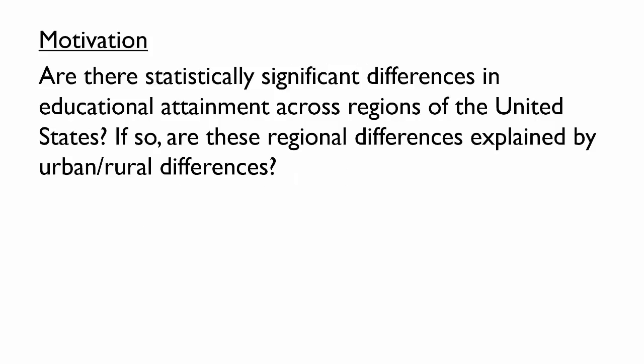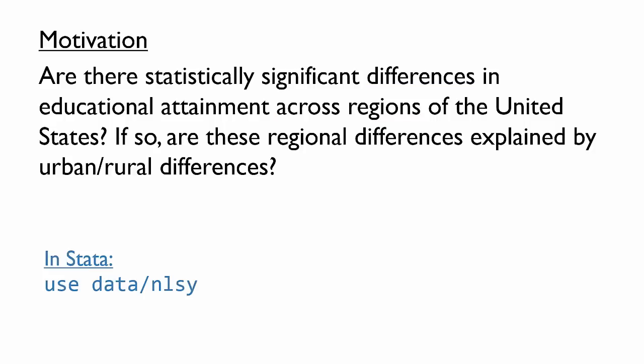Suppose we'd like to use data to answer the following questions. Are there statistically significant differences in educational attainment across regions of the United States? And if so, are these regional differences explained by urban-rural differences? We'll need to start by selecting an appropriate dataset and formulating models that enable us to conduct hypothesis tests that address these questions. When you think about differences across regions, dummy variables come to mind. Let's take a look at the NLS-wide dataset in Stata.